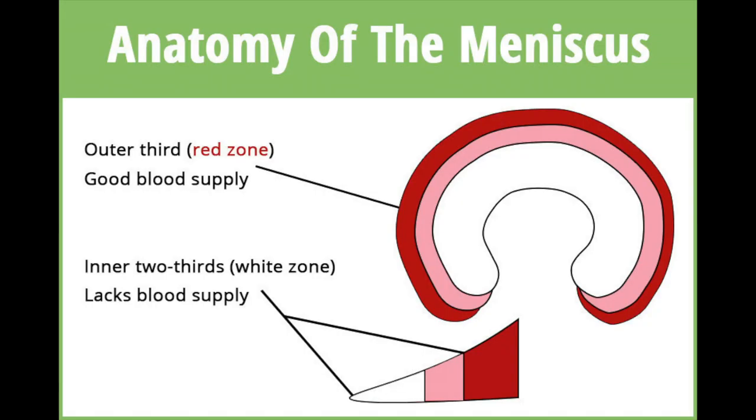The medial meniscus is more prone to injury because it is firmly attached to your tibia bone. The location of the injury can determine your treatment. The inner part of the knee has poor blood supply, so you may need surgery if you tear your meniscus there. However, the outer part of the knee has a better blood supply, so you may not need surgery for that type of injury. Most older individuals have degenerative tears in their knee, which can cause more bone-on-bone issues.